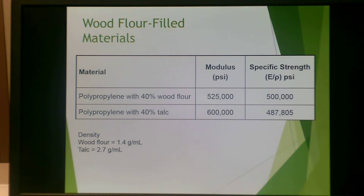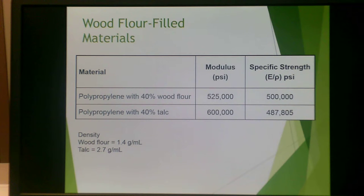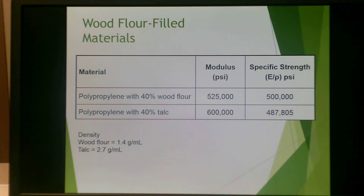To give you an idea of how fillers affect material properties, there are two different wood flour filled materials here. The first is polypropylene with 40% wood flour, and the second is polypropylene with 40% talc. The density of wood flour is about half that of talc, giving polypropylene with wood flour a higher specific strength — that is, strength per weight. The modulus overall of polypropylene is higher with talc, but the specific strength is actually lower for polypropylene with talc because wood flour has lower density.